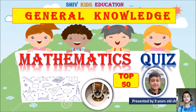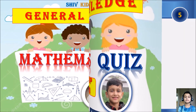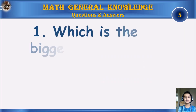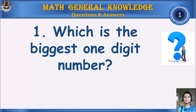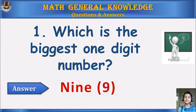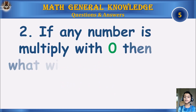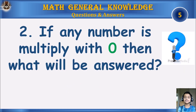Which is the biggest one digit number? Your time starts. Answer: 9. If any number is multiplied with zero, then what will be the answer? Your time starts.